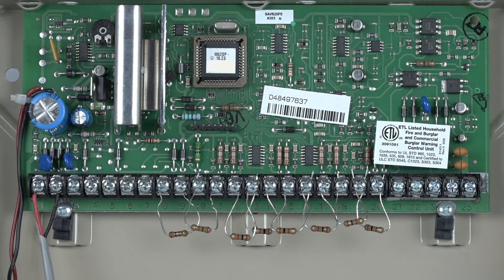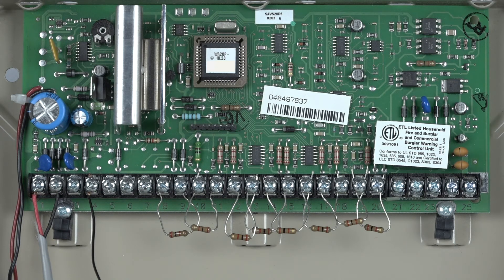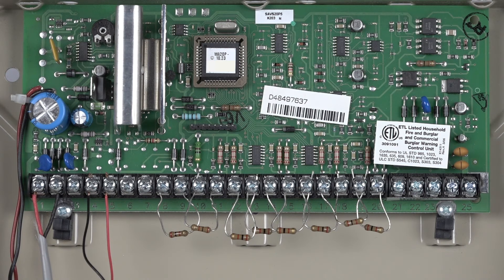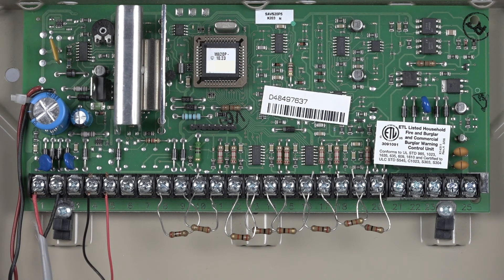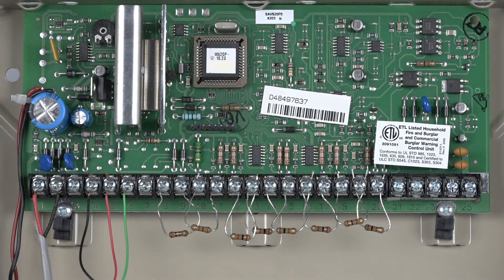Connect the black or negative wire to Terminal 4. Now, connect the red or positive wire to Terminal 5. The next wire will be green or data in on Terminal 6.